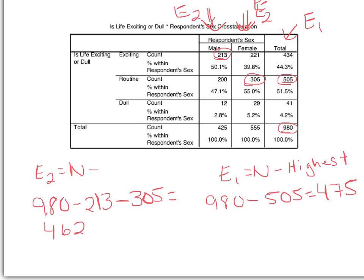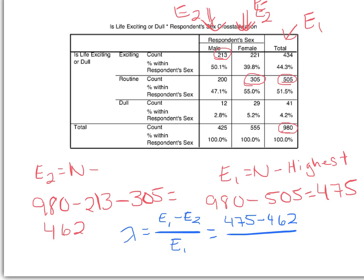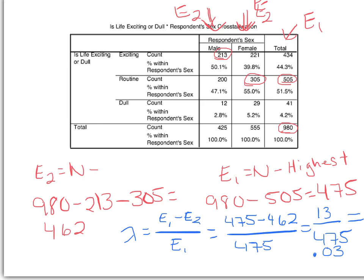Now we put E1 and E2 into the lambda equation: lambda equals E1 minus E2 divided by E1. So that is 475 minus 462, divided by 475, which gives us 13 over 475, equaling .027, or rounded to two decimal places, .03.